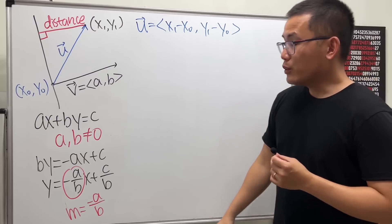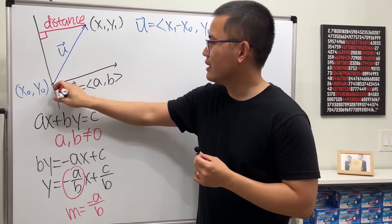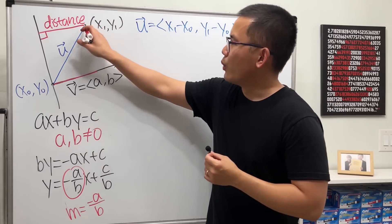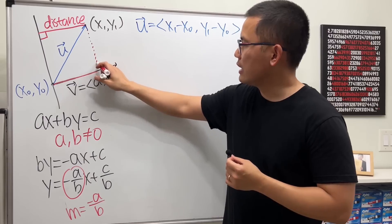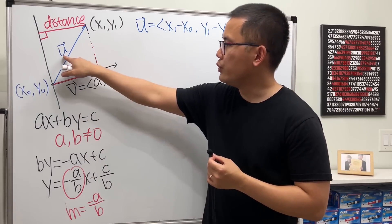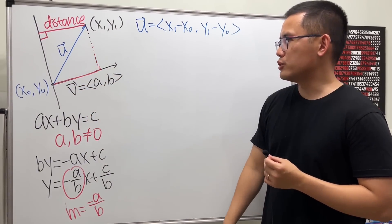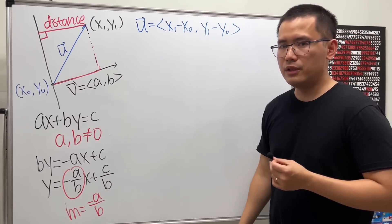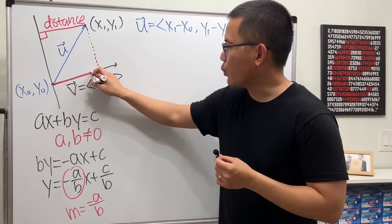The distance we want is actually the projection of u onto v — that is, when you drop a perpendicular from the tip of u onto v, the length of that projected component is the distance from the point to the line. If you want a detailed explanation of projections, check out the linked video in the description.